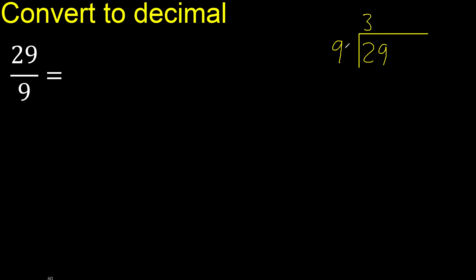9 multiplied by 3 is 27. 27 is not greater. 29 minus 27 is 2. Next.